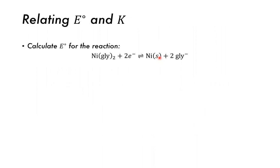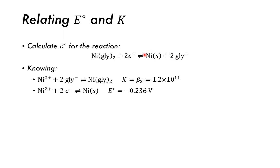Now for a new calculation: find the standard potential for the reduction of a nickel-glycine complex, Ni(glycinate)₂, to nickel metal plus two glycinate ligands. The glycinate ligands complex the nickel, making it soluble in solution; by adding electrons we can deposit nickel on the electrode surface. Given values: the equilibrium constant for Ni²⁺ + 2 glycinate forming the complex is K = 1.2×10¹¹, and Ni²⁺ + 2e⁻ → Ni metal has E° = −0.236 V.